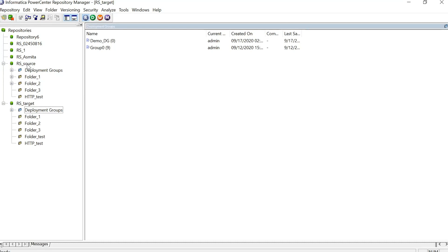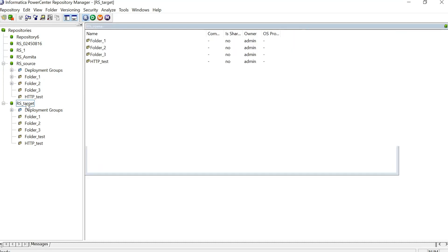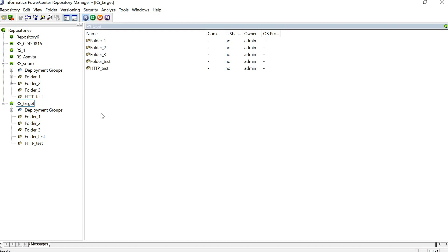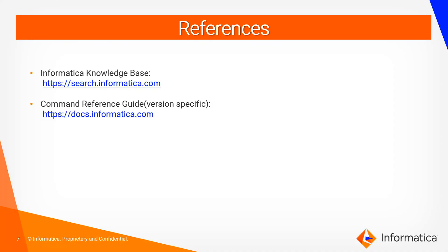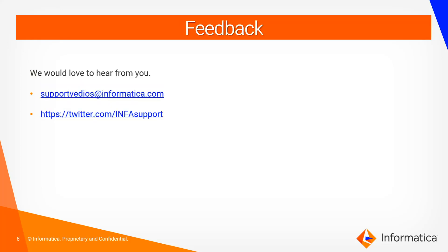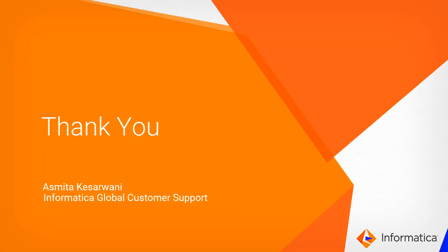One important note: in this case both the source and target repositories are version repositories, which is why the rollback option was enabled. If you are deploying from a version to a non-version repository, the rollback option will not be available, because there is only one version of each object. With this, we finish our demo session. You can refer to our knowledge base articles if you face any issues, or to our command reference guide if you want to perform deployment using commands. You can write to us at supportvideos@informatica.com or tweet us at InfoSupport. Thank you for your time.